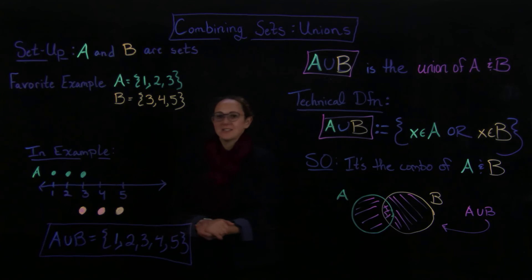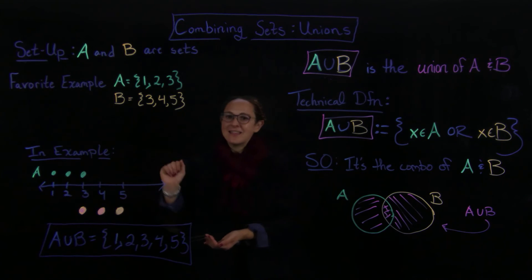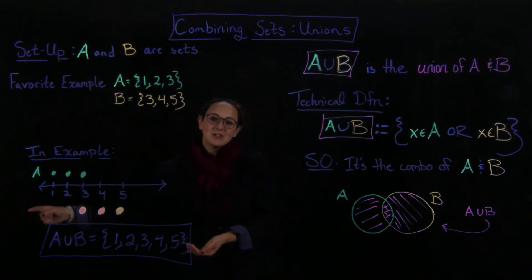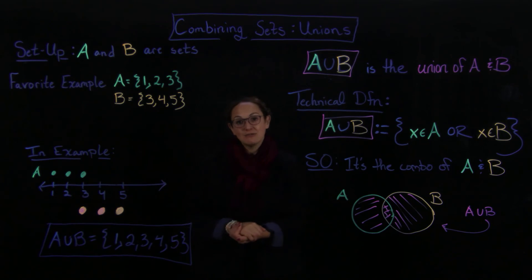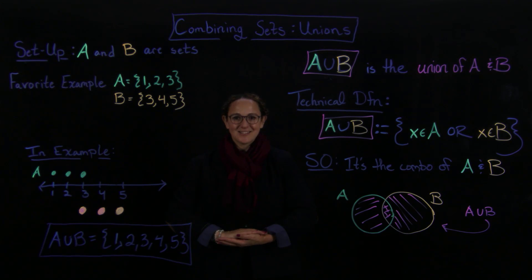And so in this particular example I just kind of drew dots for the set A and for the set B, and then anything that had a dot, even if it had 2 dots, is included. So I hope that made some sense, and I'll see you in the next lecture.